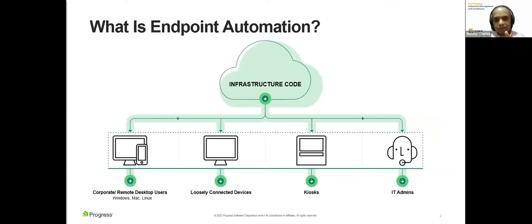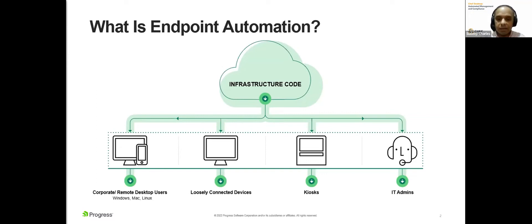What is endpoint automation? It's changing. Servers and workstations are examples of endpoints we've automated in the past and continue to automate. But on the client side, endpoints and devices also need to be automated — these could include desktops, laptops, loosely connected devices, and kiosks. Endpoint automation is achieved by deploying software solutions that enable organizations to manage these devices remotely. Such automation tools ensure systems and applications are up to date, with high availability and critical tasks performed remotely.